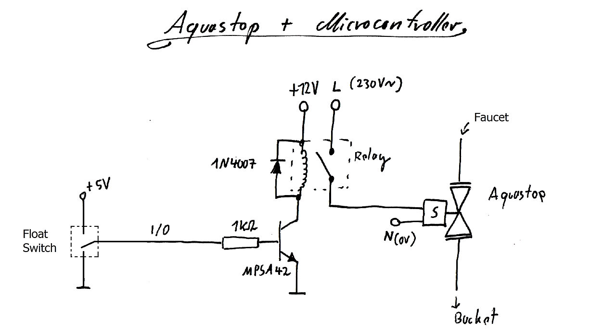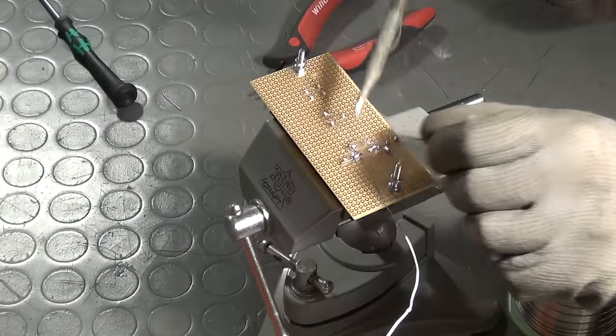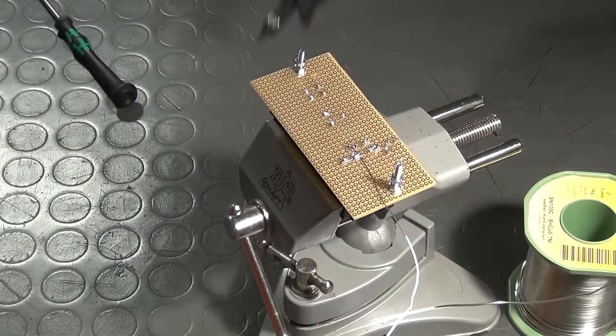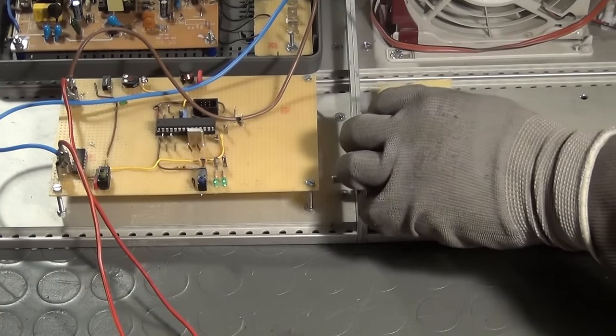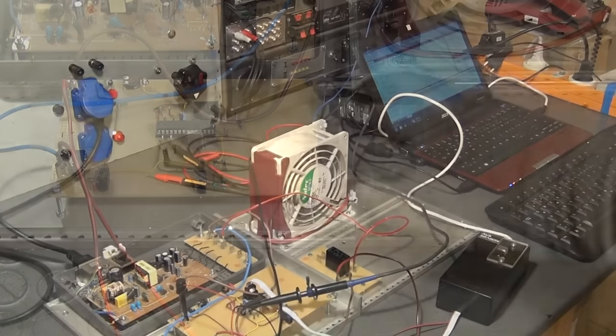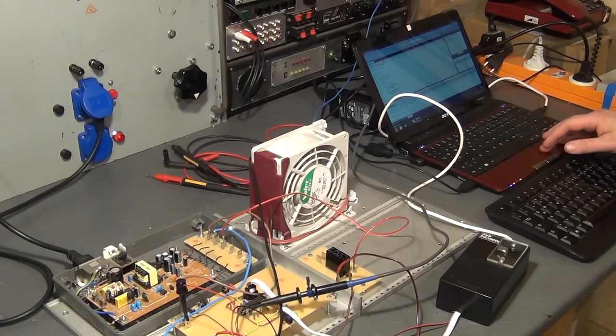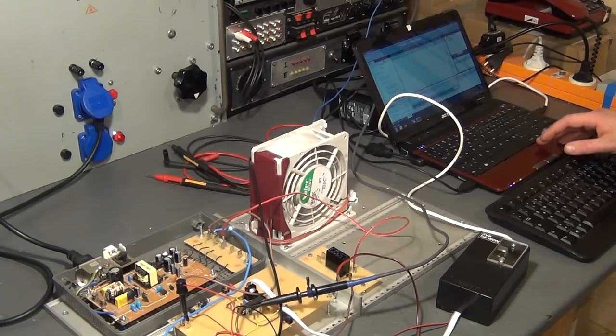But instead of doing that, I will now use a microcontroller to control the aqua stop. And for that, I first have to build a small relay board according to the circuit diagram that you just saw. So, with the relay board connected, I write a primitive program in C in order to open and close the valve periodically. Let's see if it works.